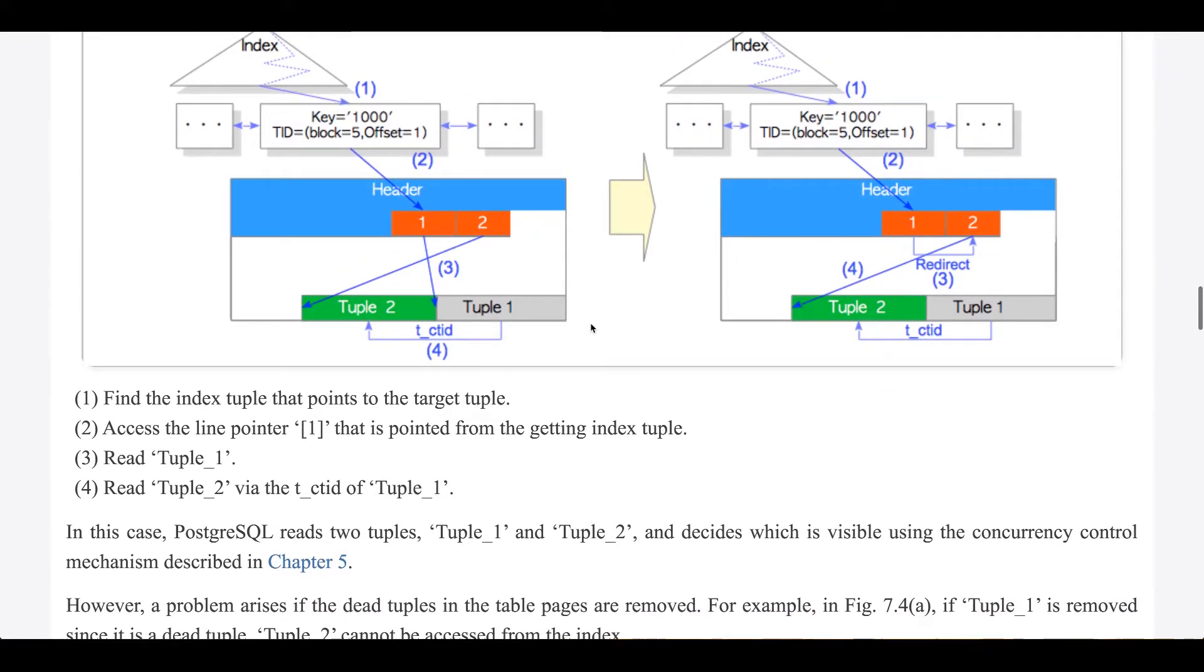Step 1: Find the index tuple that points to the target tuple. Step 2: Access the line pointer 1 that is pointed from the getting index tuple. Step 3: Read tuple 1. Step 4: Read tuple 2 via the t_ctid of tuple 1.